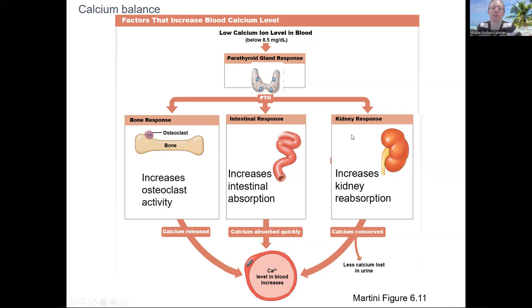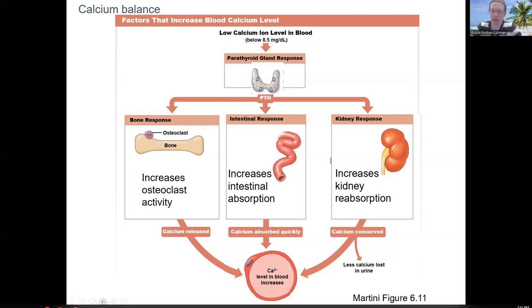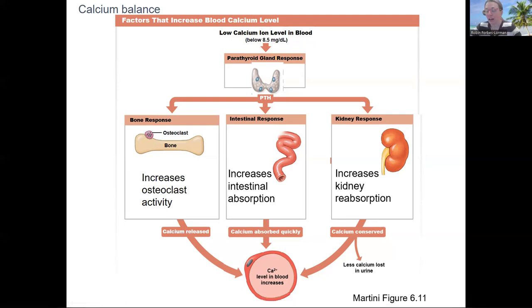And then lastly, the kidneys. We saw this last week. The parathyroid hormone targets the distal collecting duct specifically to increase reabsorption of calcium. And so reabsorption means it's conserved, it's not lost in the urine. So should all be kind of review. We're going to talk about these two. I've got one more figure that shows kind of the molecular happenings with those, the intestine and the kidney.